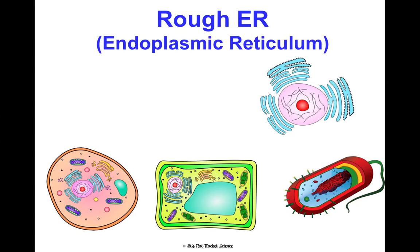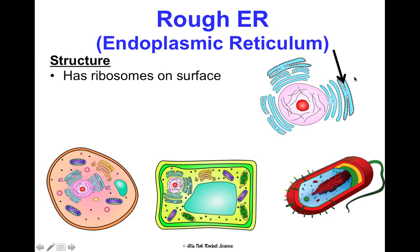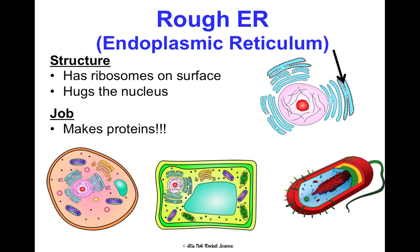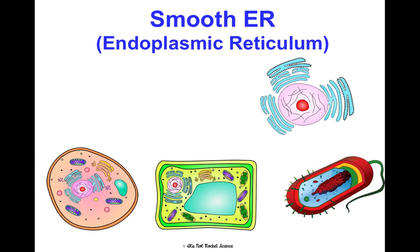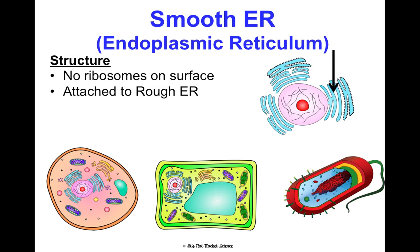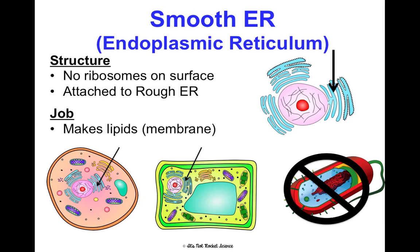The rough endoplasmic reticulum (rough ER) usually hugs the nucleus. It has ribosomes on its surface, which is what makes it rough, and its job is to make proteins because of those ribosomes. It is not present in prokaryotic cells. The smooth endoplasmic reticulum (smooth ER) does not have ribosomes, which is why it's smooth. It's attached to the rough ER and close to the nucleus, and its job is to make lipids and membranes. It's also not in prokaryotic cells.